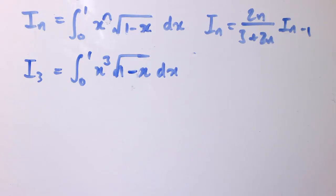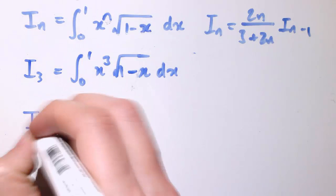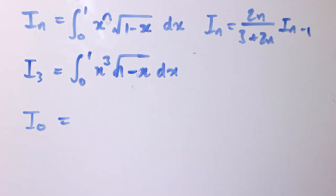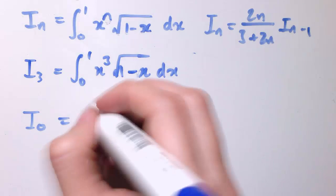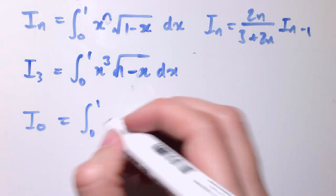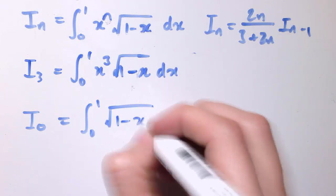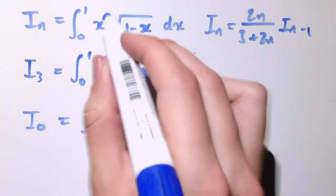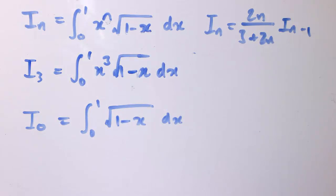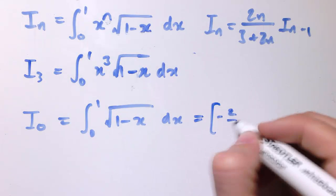And I could apply the reduction formula. So rather than integrating this by parts several times, I can just work out i0. And i0 would be the integral between 0 and 1 of the square root of 1 minus x dx, because when n is 0, we've got x to the 0 is just 1.